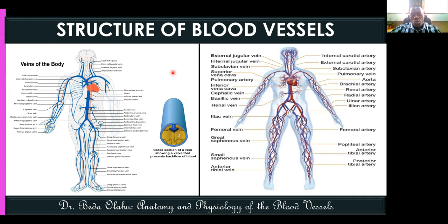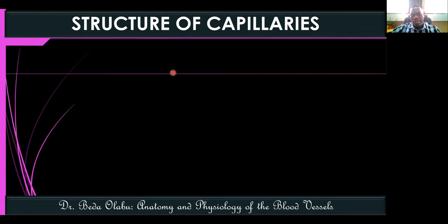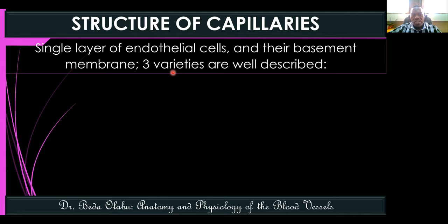This applies to deep veins — superficial veins have different names, such as the saphenous veins. Now let's talk about capillaries. Capillaries differ from arteries in that they don't have three layers — they have only a single layer of endothelial cells and their basement membrane.